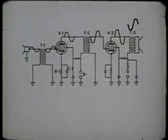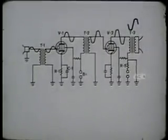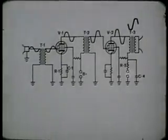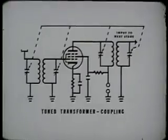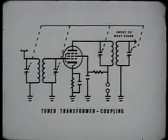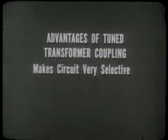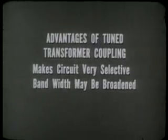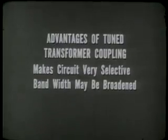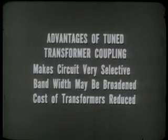In the plate circuit of V2, there is a resistor R5 and a capacitor C4. These elements are placed in the circuit to decouple any variation in the B-plus voltage around the power supply. This type of circuit is found when there is more than one stage operated from the same power supply. In many RF circuits, tuned transformer coupling is used between stages. This method has several advantages: it makes the circuit very selective, the bandwidth may be broadened by adding resistance to lower the Q of the tuned circuit, and the cost of the transformers is substantially reduced since there is no need for an iron core and fewer turns are required.